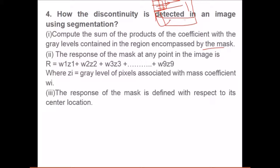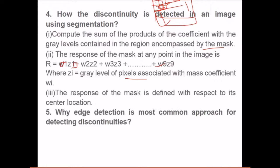When it's done with one row left to right, then you can do it again till all the rows are completed. The mask value and the brightness value is multiplied for each and every block and then we add it. This zi is nothing but the gray level of pixel values with mask coefficient wi. The response of the mask is defined with respect to its center location. Whatever value you have achieved, you just replace the center one with that value. This is how discontinuity is detected.